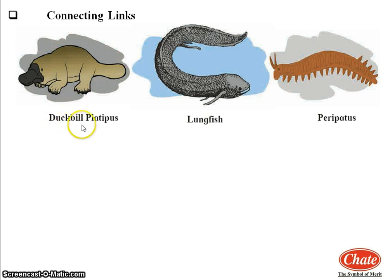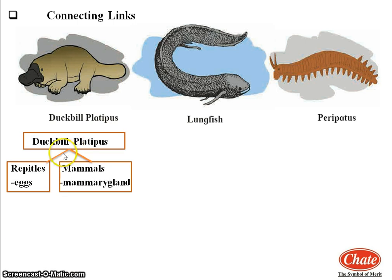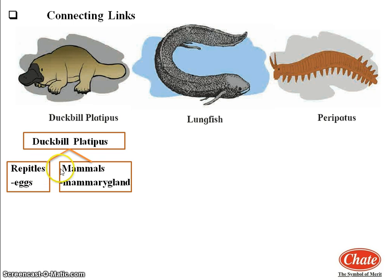First, we will see the duckbill platypus. Duckbill platypus lays eggs like reptiles, but shows relationship with mammals too due to the presence of mammary glands and hair. So duckbill platypus is a connecting link between reptiles and mammals, because it shows some morphological characters related to both reptiles and mammals.